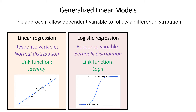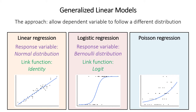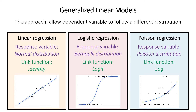In logistic regression we use a logit to convert our continuous data into this one-zero predictor. The final type of generalized linear model covered here is Poisson regression, where the response variable is modeled by the Poisson distribution and we use a logarithmic function as the link between our numbers.